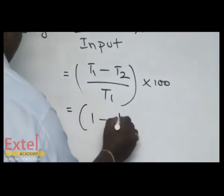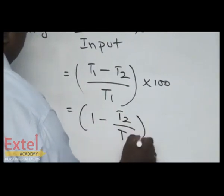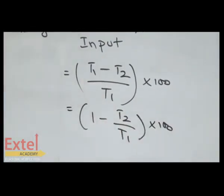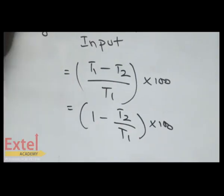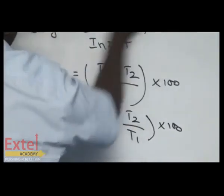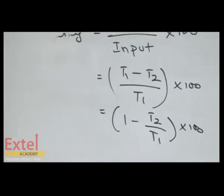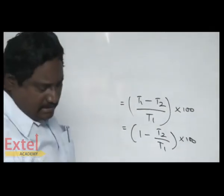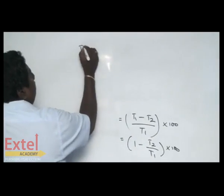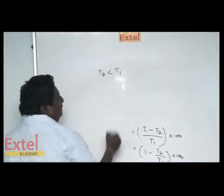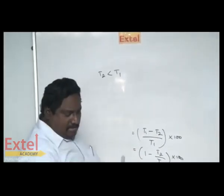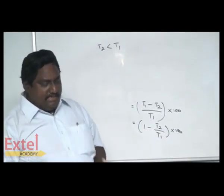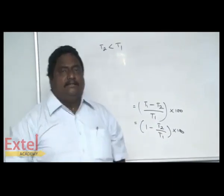According to the second law of thermodynamics, T2 is less than T1. When T2 is less than T1, efficiency is less than 100.